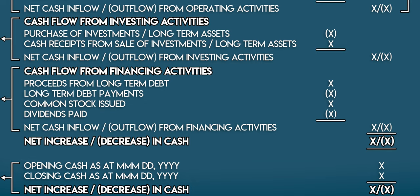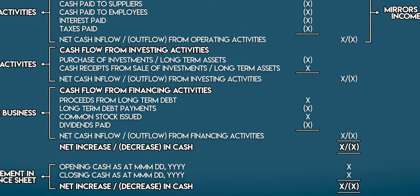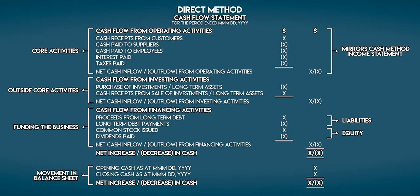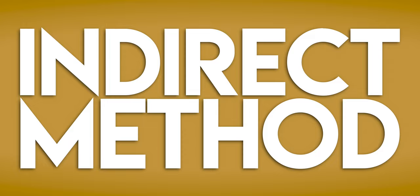Cash flow from financing activities relates to the raising or repaying of cash or capital. There are two ways a business can do this — using liabilities or equity. They can borrow money from a third-party bank, which would increase their liabilities, or a business can look to its owners, its shareholders, who can make capital contributions which increase equity. On the flip side, they also make loan repayments back to the bank and distribute dividends back to the owners. When we add up the net cash flows from operating, investing and financing activities we can reconcile the net increase or decrease in cash back to the movement in the balance sheet.